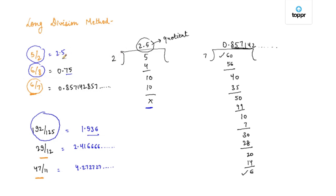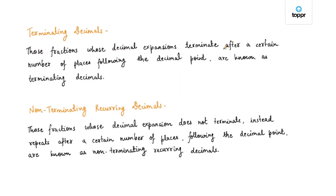Fractions whose decimal expansion terminates after a certain number of places following the decimal point are known as terminating decimals. Those fractions whose decimal expansion does not terminate but instead repeats itself after regular intervals are known as non-terminating recurring decimals. If you are given any fraction and asked whether it is terminating or non-terminating, you can do its long division to find out.